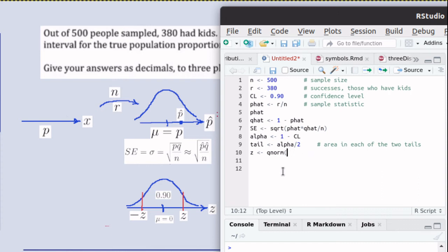We could also take one, the total area under the curve, minus a tail. Either one of those two calculations would tell us what this area is. And that's what we need to tell Q norm so that Q norm can tell us what z is.